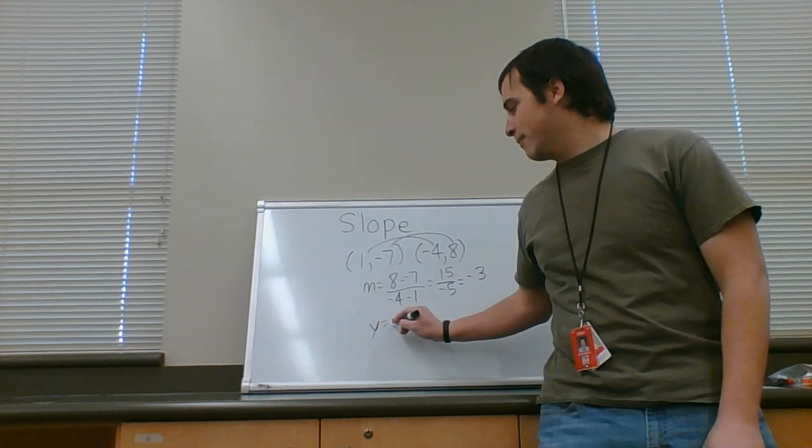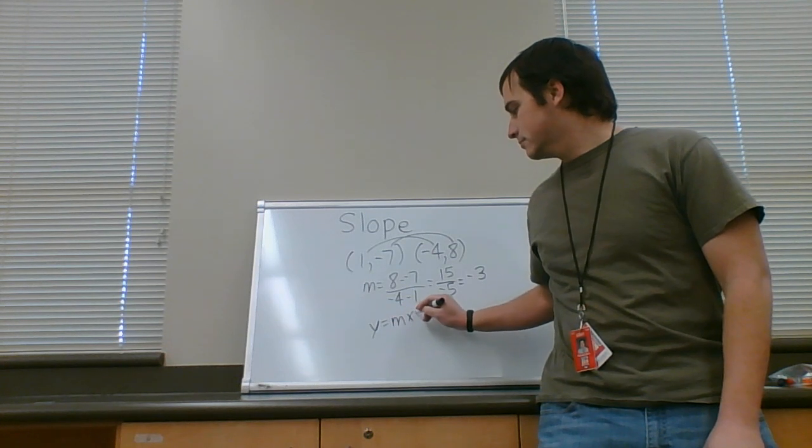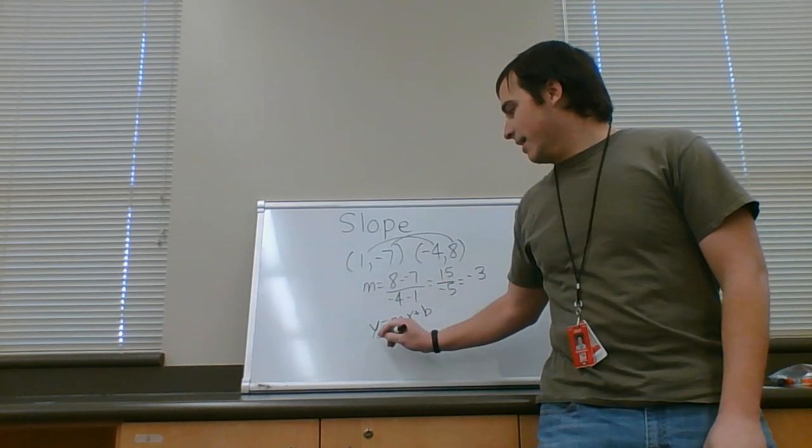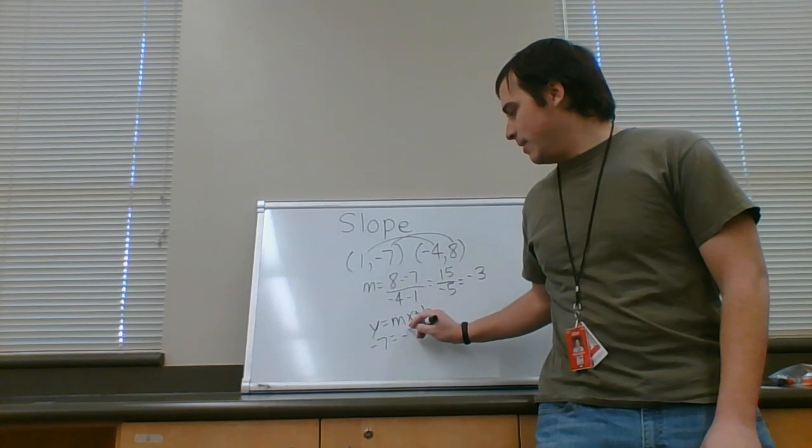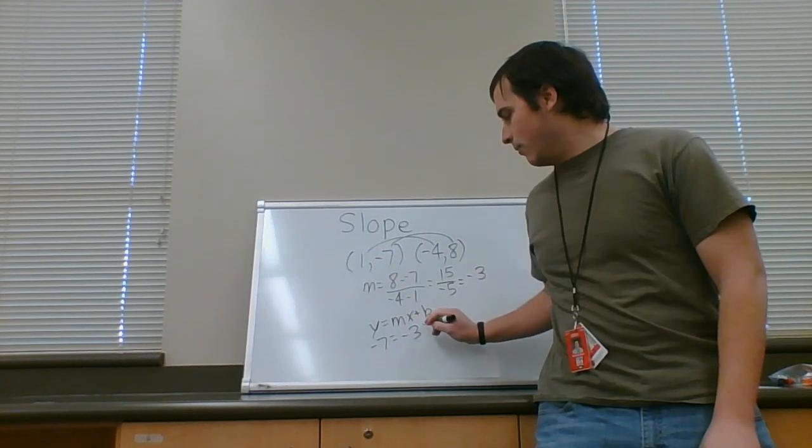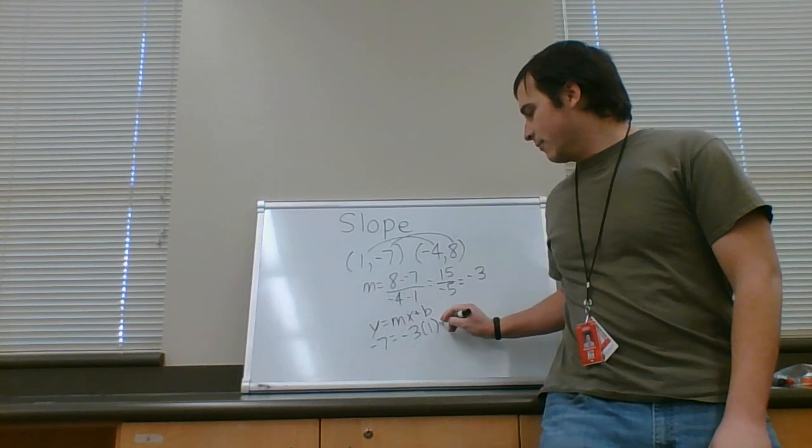Remember, y equals mx plus b. y is negative seven. m is negative three. We just solved for that. x is one. Now, we're solving for b.